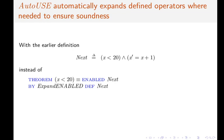And we can do that writing BY blah blah blah DEF Next. This tells the prover to replace Next with its definition. Well, now we can do this with the proof directive AutoUSE.